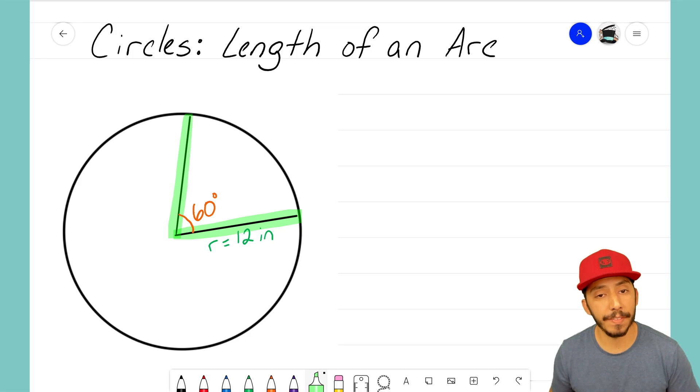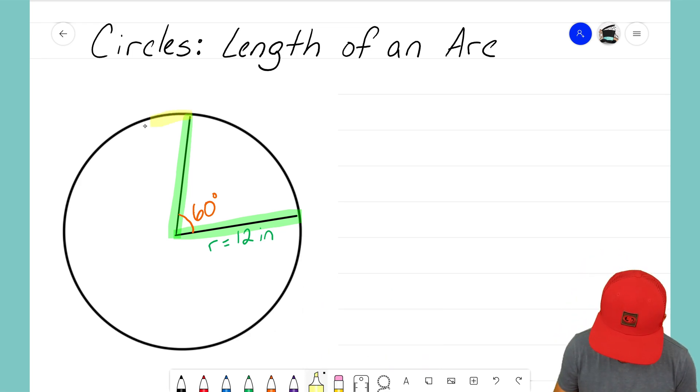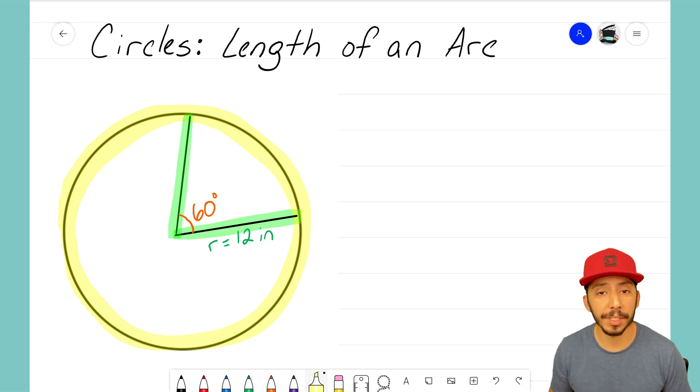We see that we have a sector here of this circle that's a 60-degree angle. Now we know that the circumference of this circle is going all the way around that circle, and if we wanted to we could find that circumference by just using our circumference formula.